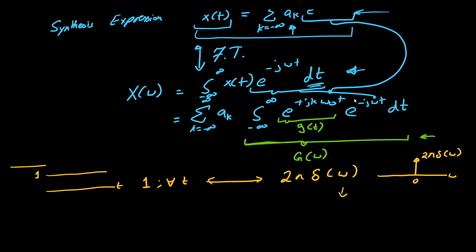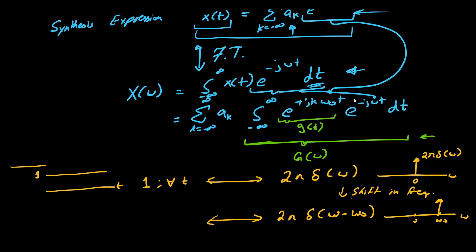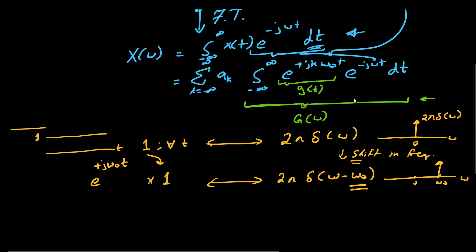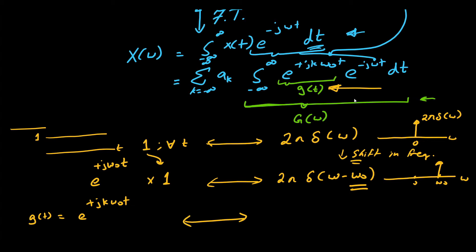If we perform a frequency shift, we get 2π δ(ω − ω₀), meaning the signal has been shifted to ω₀. By the frequency-shifting property, the corresponding time-domain signal is multiplied by e^(+jω₀t). So our g(t) is e^(+jkω₀t), and its Fourier transform G(ω) is 2π δ(ω − kω₀).